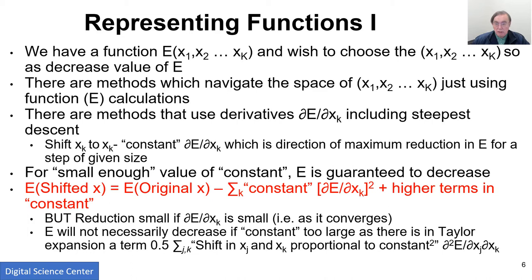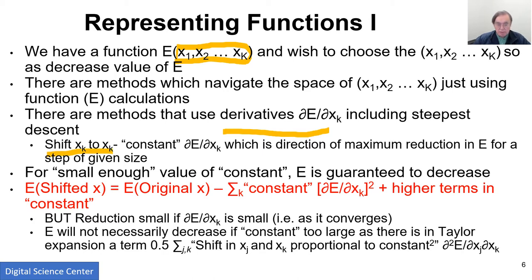Let's continue this discussion of how we minimize a function E which has parameters x1 to xk, which define the model. We want to choose those parameters to get the smallest possible value for E. To do that, there's a space formed by these x's — typically a vector space — and we just have to run around that space finding the smallest value. The best known method, effectively used by deep learning, is called steepest descent. You take your current position x, you calculate the derivative, and you move in the direction of the gradient. If you think about sitting on a hill, moving in the direction of the gradient is going down the direction which gives you the fastest decrease.